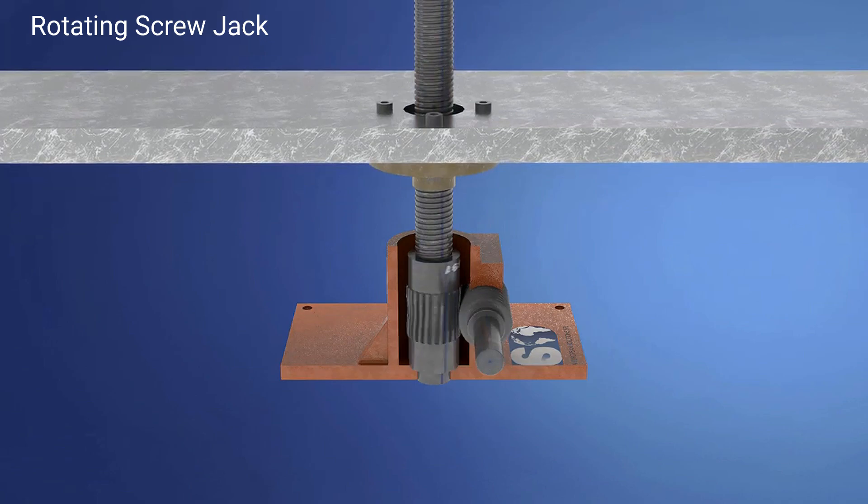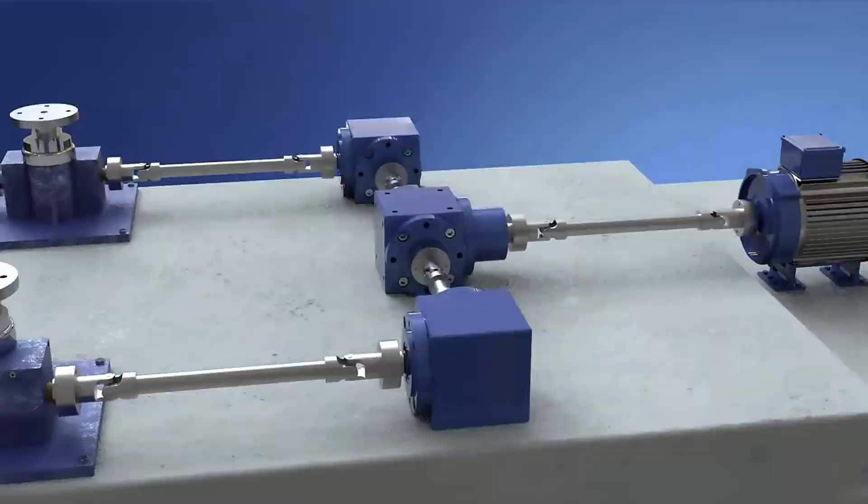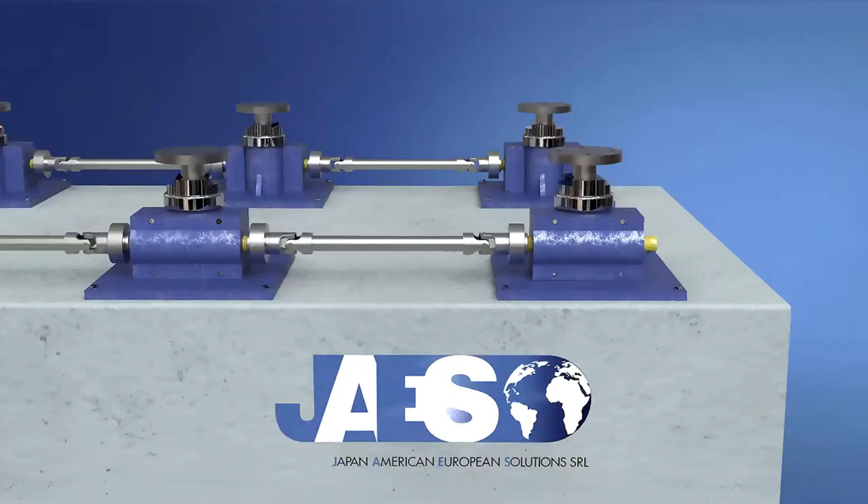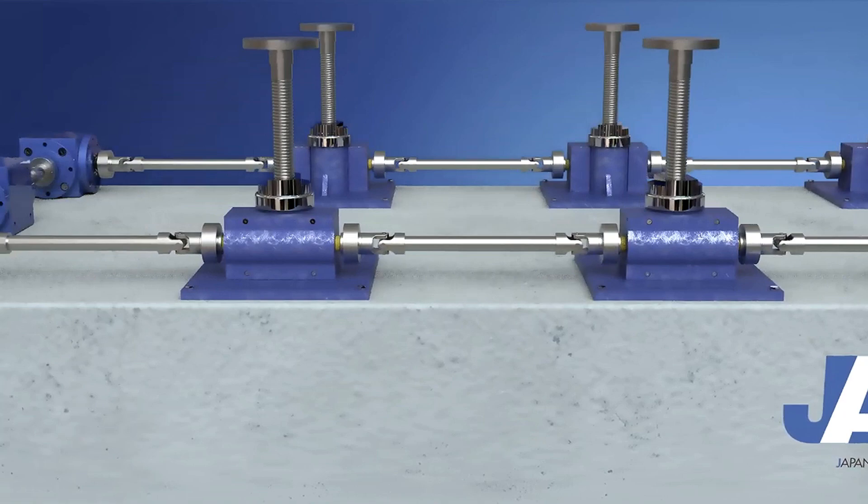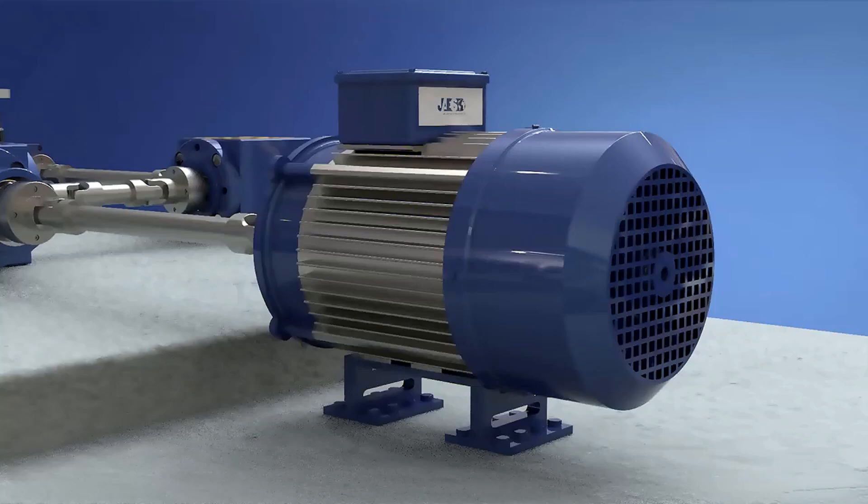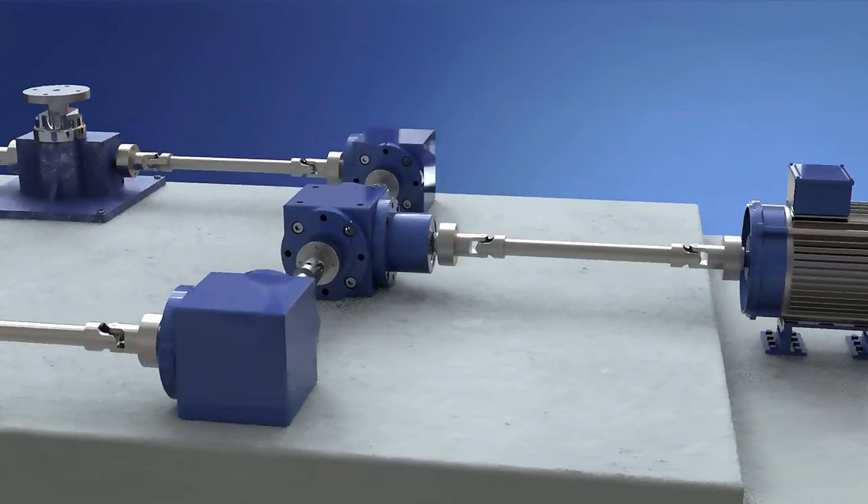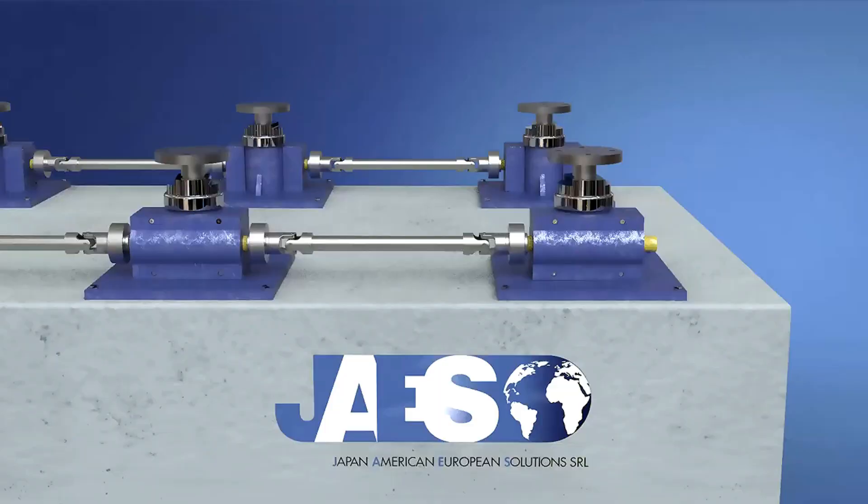A screw jack can be used individually or in a screw jack system configuration. Multiple screw jacks can be linked together mechanically or electrically using couplings, drive shafts, gearboxes and bevel gears, all driven by a single common motor. This allows the creation of real lifting systems designed to work in perfect unison, even in the presence of non-uniform distributed loads.